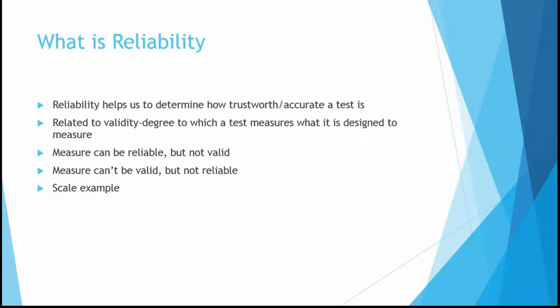Reliability helps us determine how trustworthy or accurate a test is — how much can we trust the tests we're using? Reliability is also related to validity. A simple definition of validity is the degree to which a test measures what it's designed to measure. A measure can be reliable but not valid, but it can never be valid without being reliable. If something is valid, it has to be reliable, but if it's reliable, it's not necessarily valid.